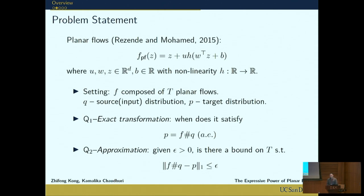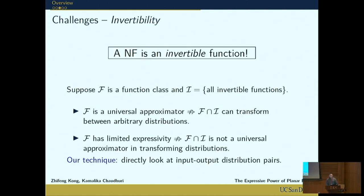Now you might want to ask, we have a lot of theoretical work on neural networks, say universal approximation properties for very wide networks or very deep networks. Why do we have to do this? I will say this is a different problem. Here is the challenge. A normalizing flow is an invertible function.